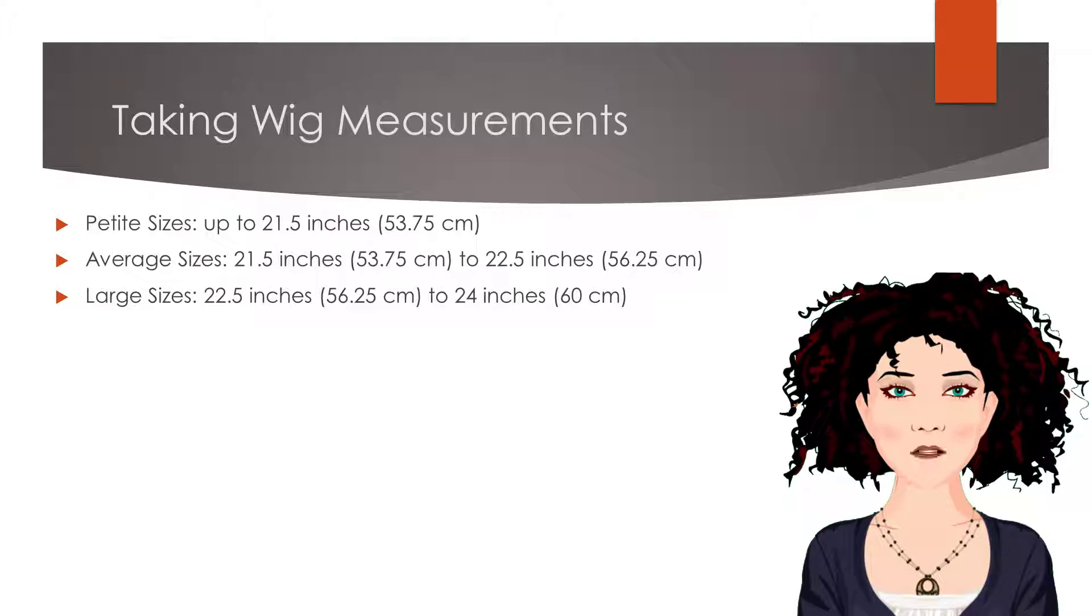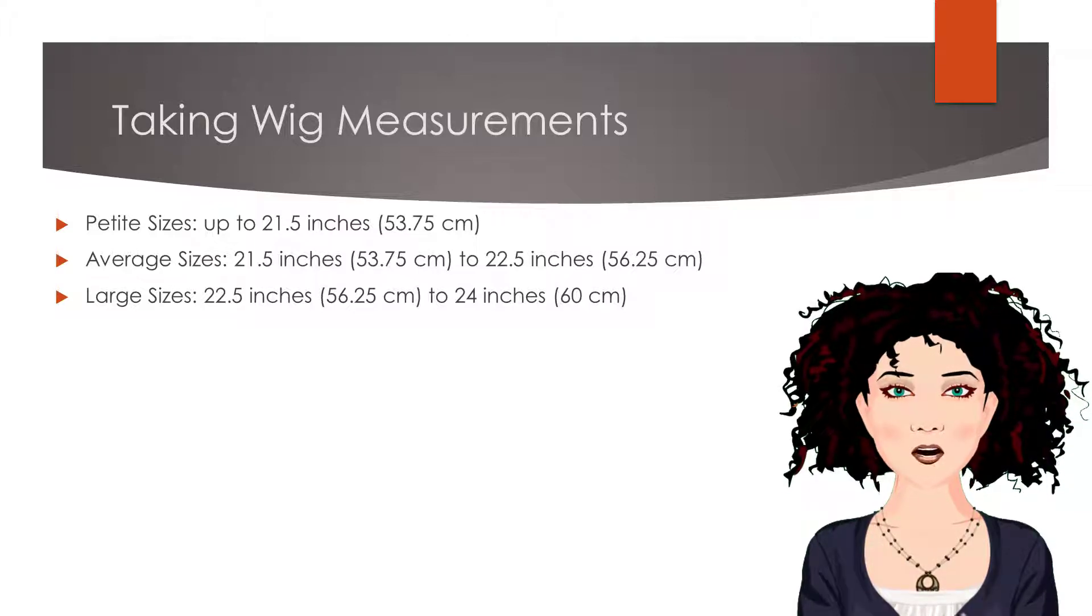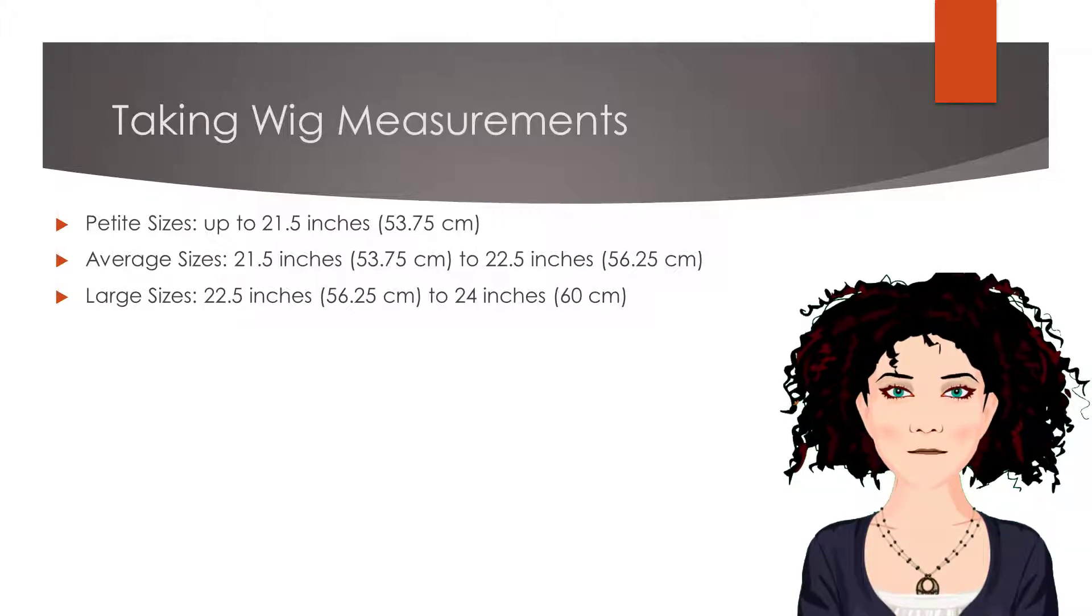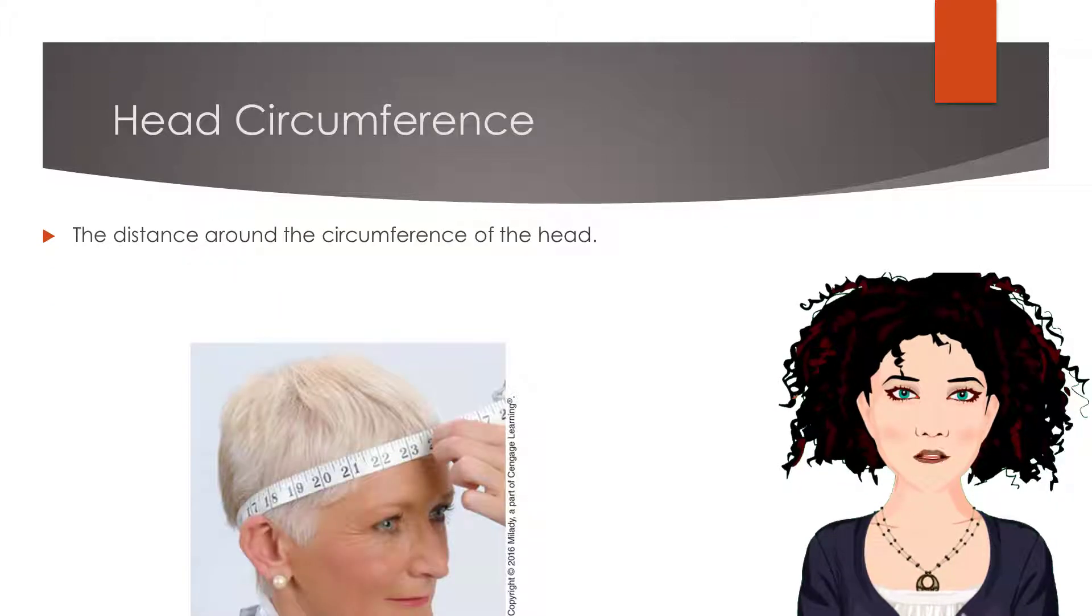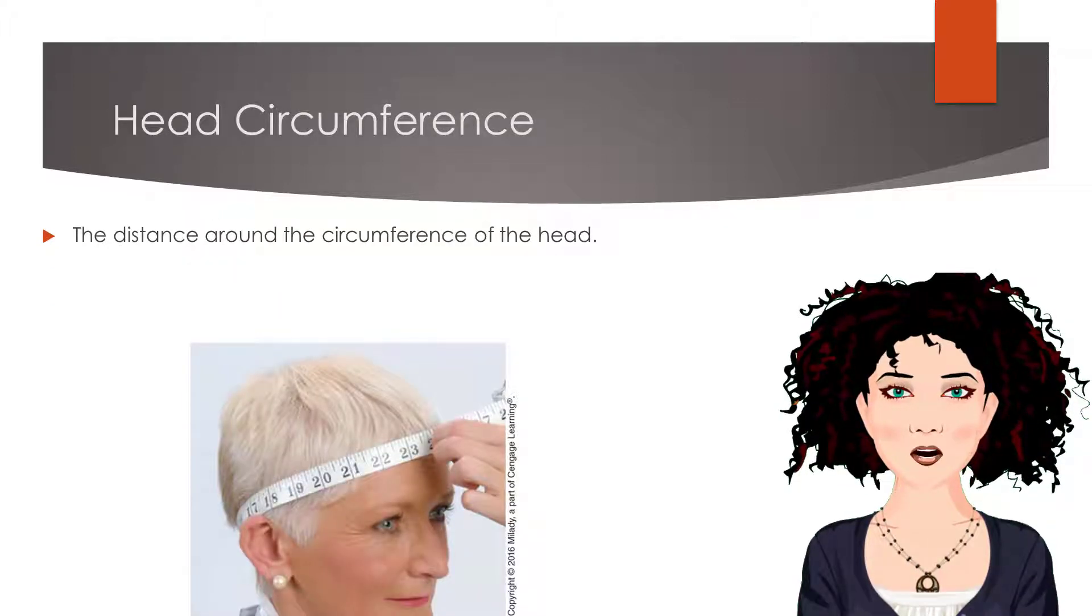Wigs listed as a size petite measure up to 21.5 inches. Average sizes measure 21.5 to 22.5 inches, and large sizes measure 22.5 up to 24 inches. The head circumference is the distance around the circumference of the head. Write this number down in inches or the preferred unit of measurement.